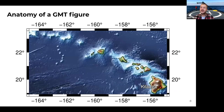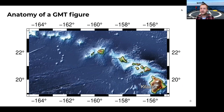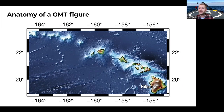To show how GMT works, I'll use an example figure — a map of the state of Hawaii. The map elements include a base map frame with ticks and longitude/latitude annotations, a nice shaded relief bathymetry and topography, black coastlines, a symbol for Kilauea volcano, and a text label. Those are the components of this GMT figure.